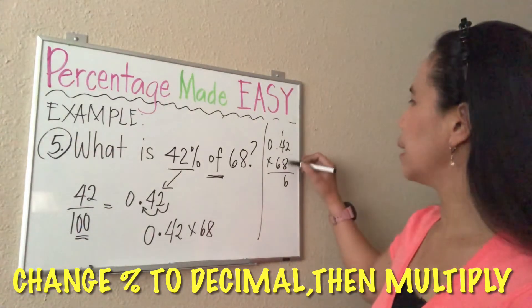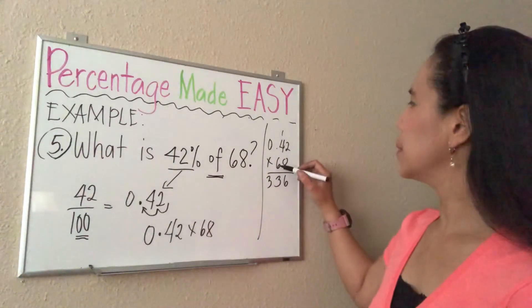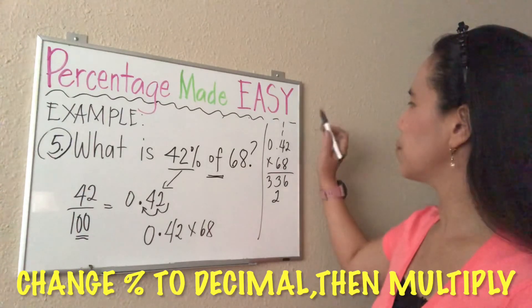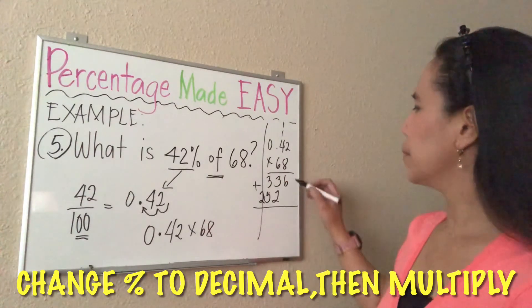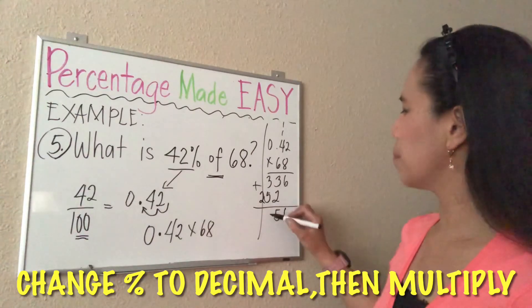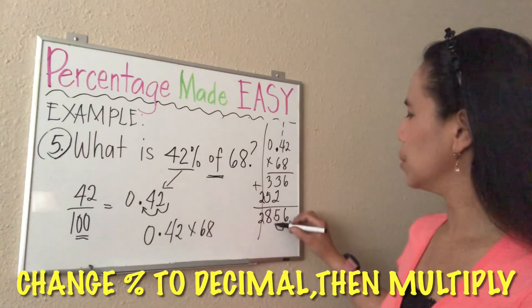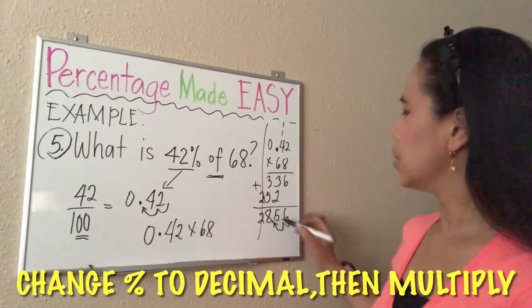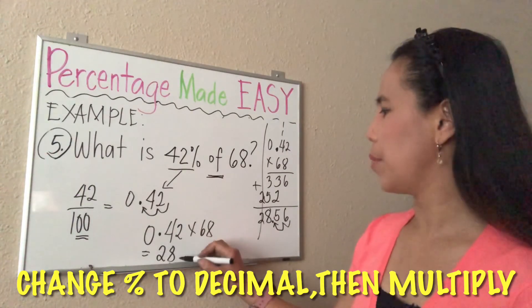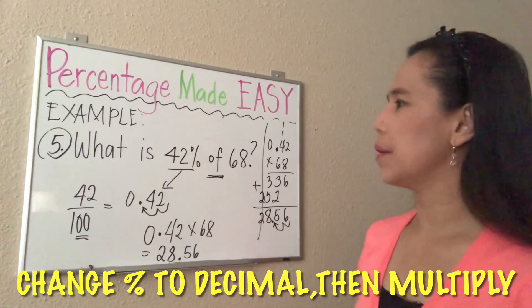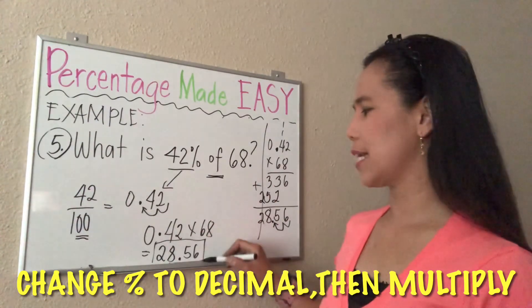We have 0.42 times 68. 8 times 2 is 16, then 8 times 4 is 32 plus 1 is 33. 6 times 2 is 12, then 6 times 4 is 24 plus 1 is 25. Now add them: 6, then 3 plus 2 is 5, 3 plus 5 is 8, bring down 2. Since we have 2 decimal places, we place the decimal to get 28.56. So 0.42 times 68 is 28.56—that's our final answer for what is 42% of 68.